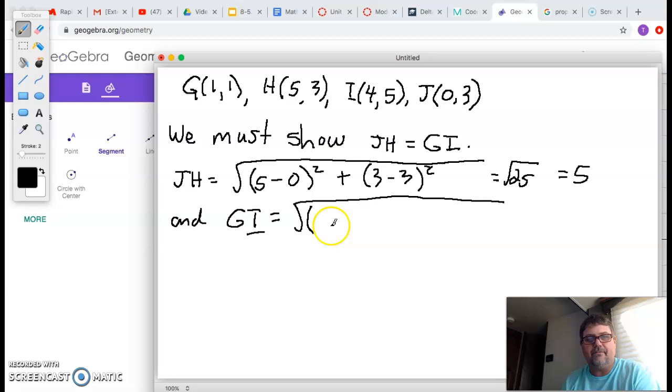I'm just going to do it left to right again. 1 minus 4. Square it. And 1 minus 5. Square it. All right, what's that going to give me? Let's see. That's going to give me a 3. Negative 3, actually. But squaring a negative 3 is going to give me a 9. Sorry about that little mark there. I have to kind of ignore that.